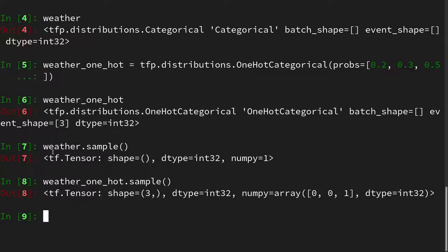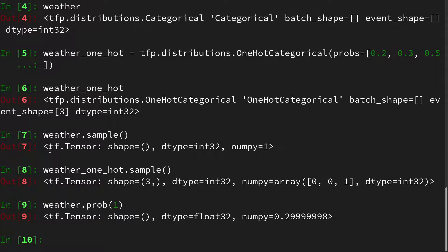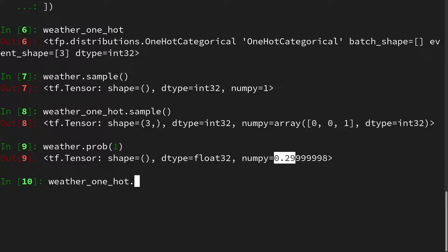And we can also use these distributions in order to access the probability of a certain event. So what is the probability of, for instance, rainy weather? So we plug in rainy and we get 0.3 for the regular distribution. But if we would do this for the one-hot distribution, it would actually work, but it would not be some sort of the correct answer. So we have to enter a vector that is associated with the shape of the event. So, and therefore we use our one-hot encoding. So we do 0, then 1, because it is rainy, and 0 at the end. And then we get the same probability.